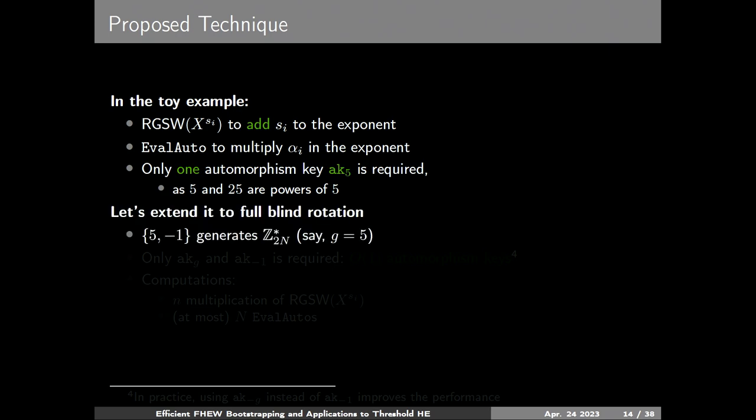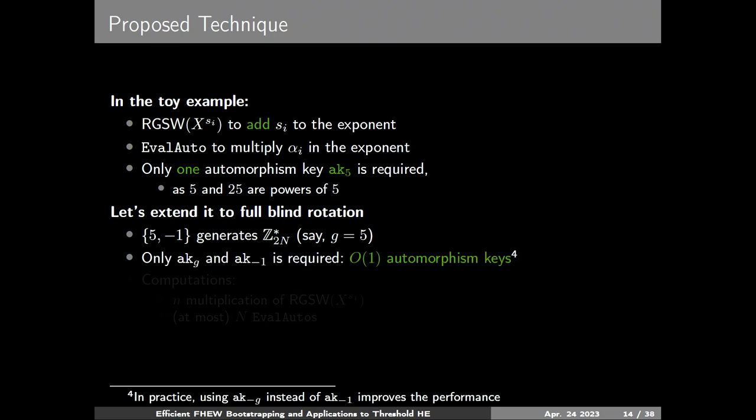We can extend this to the full rotation. It is well known that 5 and −1 generate Z*_{2N}. We only need automorphism keys for AK(g) and AK(−1), so we need only a constant number of automorphism keys. The total computation will be N multiplications of RGSW and at most N eval_autos.